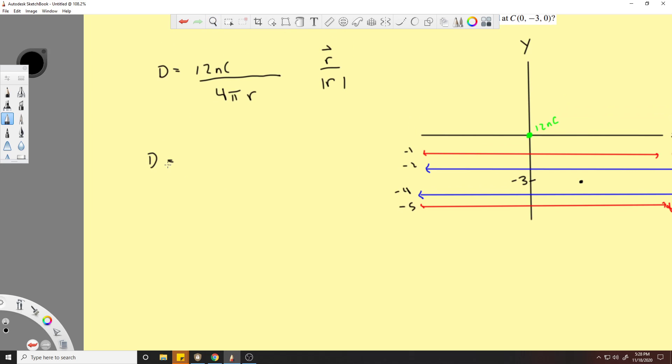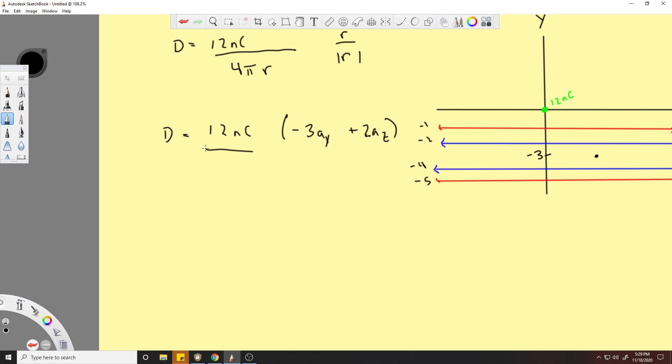D is equal to 12 nanocoulombs times negative 3 a_y plus 2 a_z, no x component like we're talking about. This will be 4 pi times r, excuse me, r squared. So r squared is going to be 3 squared plus 2 squared.